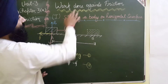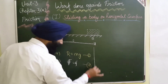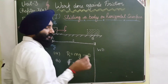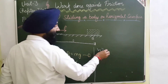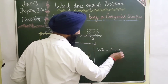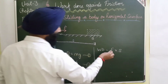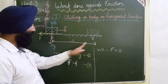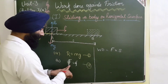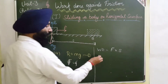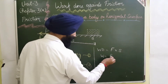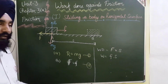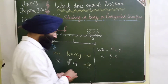We have to find the work done against the frictional force. The formula of work done is force into displacement. Applied force is F and displacement is S. Since applied force equals frictional force, work done equals frictional force into S. This is equation number 3.